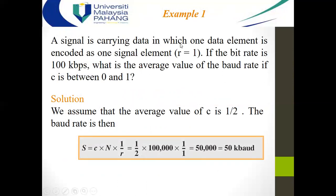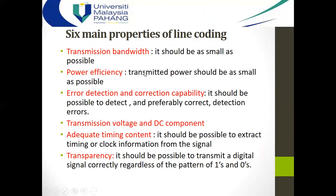The relationship between signal rate S and data rate N is: S = c × N × (1/r), where c is a constant case factor. For example, a signal carries data where one data element is encoded as one signal element, so r = 1. If the bit rate N is 100 kilobits per second, and assuming c = 1/2, then the baud rate S = (1/2) × 100,000 × 1 = 50,000 baud.